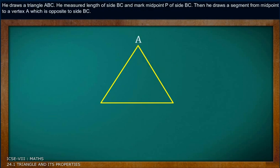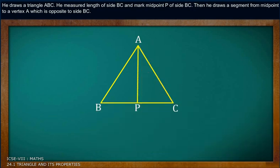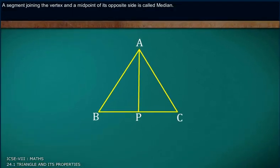He draws a triangle ABC. He measured length of side BC and mark midpoint P of side BC. Then he draws a segment from midpoint to vertex A which is opposite to side BC. A segment joining the vertex and midpoint of its opposite side is called median.